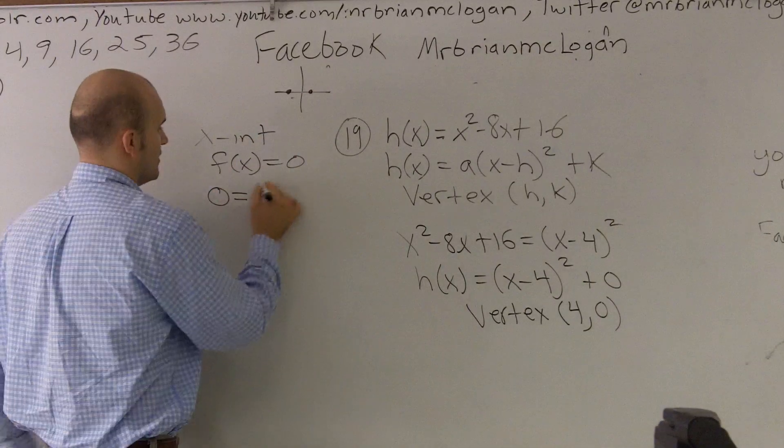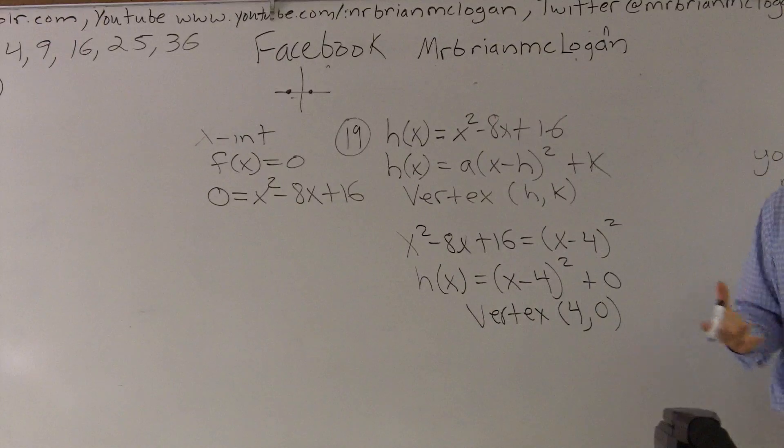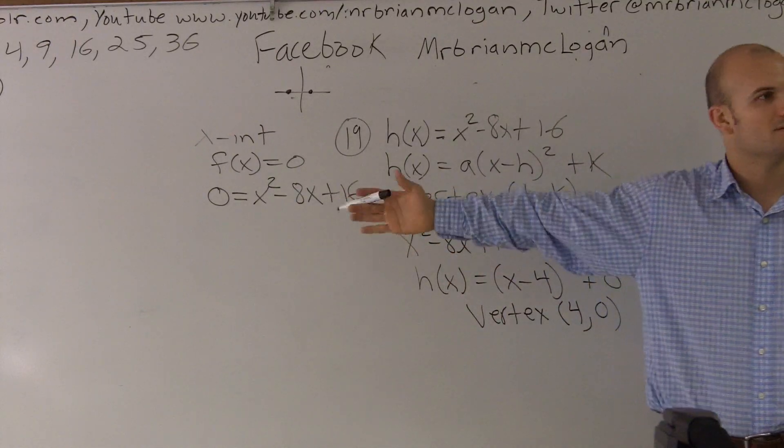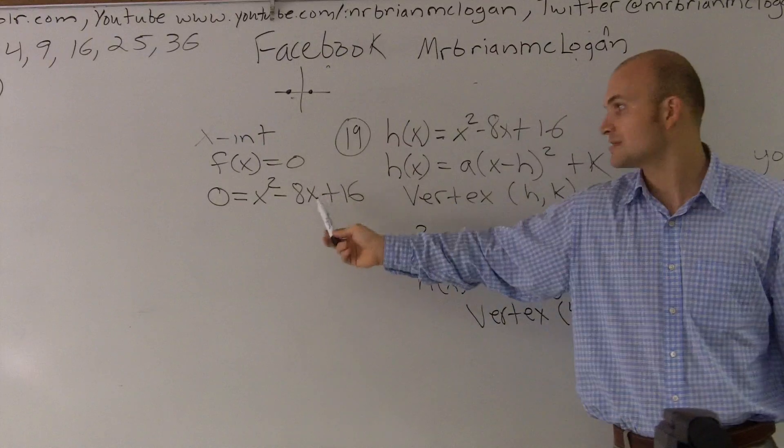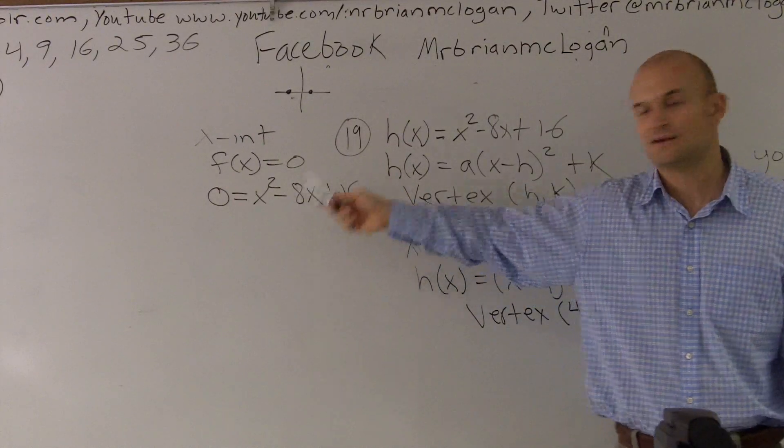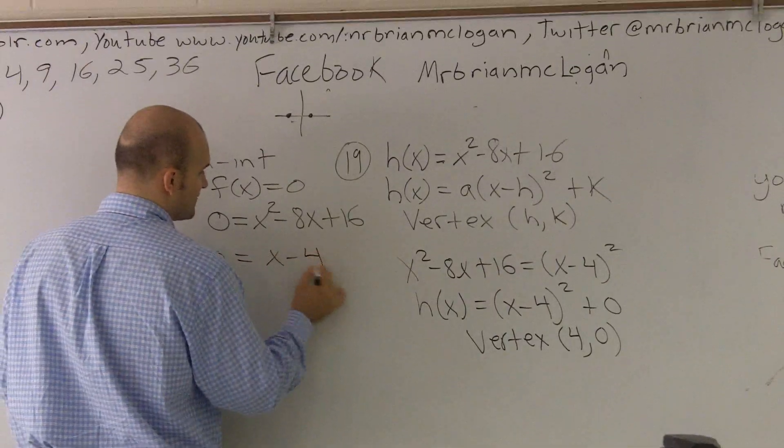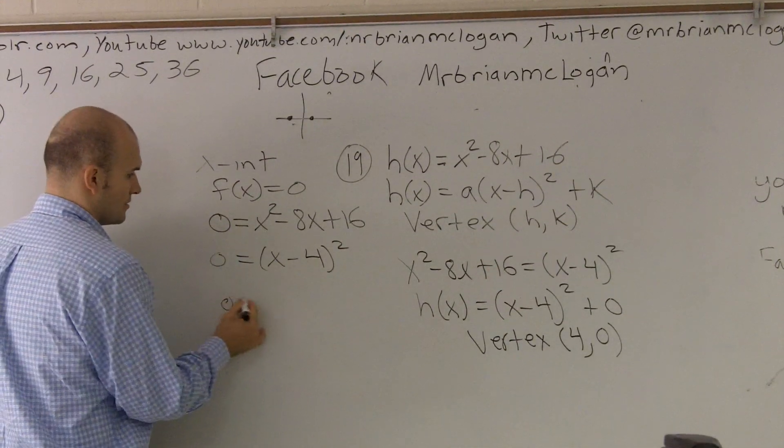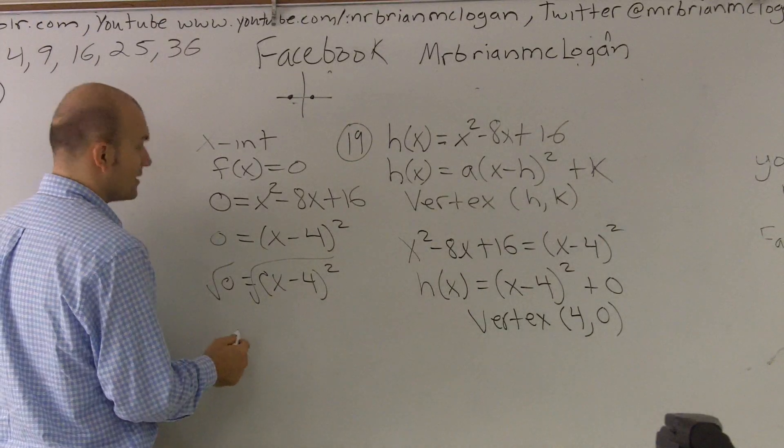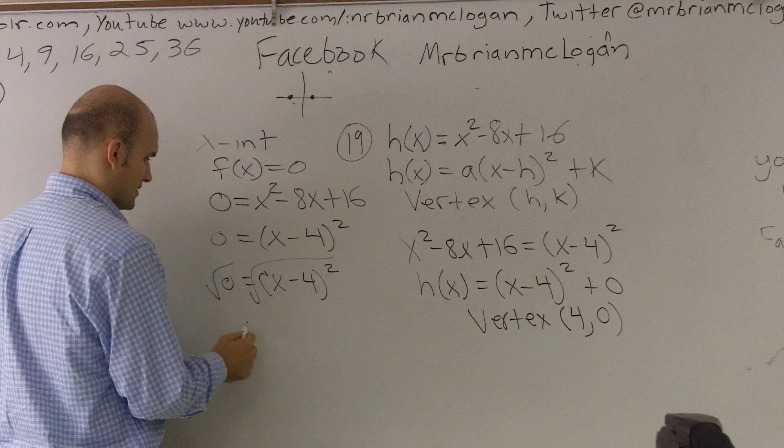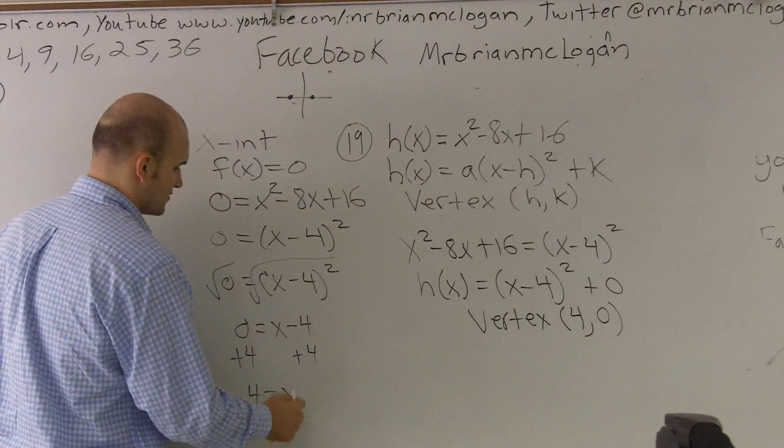So I say 0 equals x squared minus 8x plus 16. Now, you're going to have to use your algebraic techniques to see if you can solve for x. Well, guys, whenever you see a trinomial, you should be thinking about factoring. It can factor this. And yes, we can factor this. We know that what two numbers multiply to give you 16, but add to give you a negative 8. Well, we already did it for over here, completing the square. So we know that 0 equals (x minus 4) squared. Then I take the square root of both sides. And therefore, I get 0 is equal to x minus 4. Add a 4 onto both sides. So 4 is equal to x.